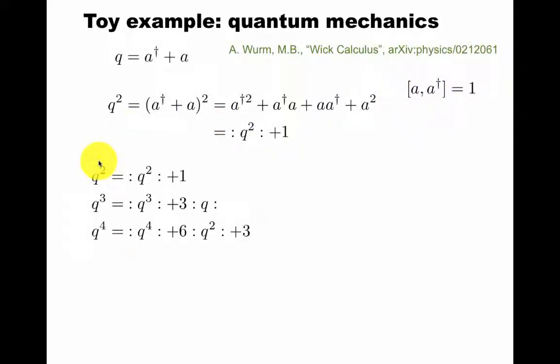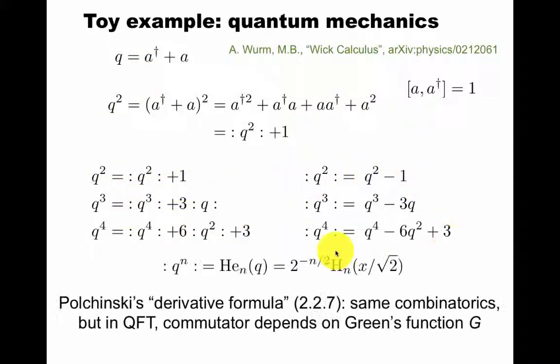So we can keep going and normal order different powers of q, and we get some structure here. This can now be inverted, just recursively we can write like this. This is a Hermite polynomial. This is usually not that important. Some mathematical physicists use this definition. In fact, Polchinski's derivative formula has the same combinatorics as what we're doing here. It's slightly more complicated because in quantum field theory, the commutator is not just one, but it depends on the Green's function.